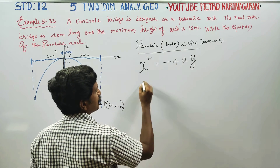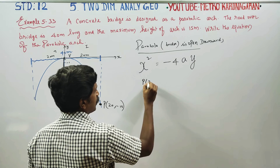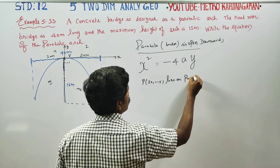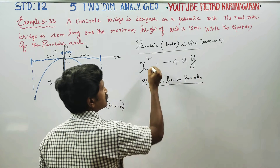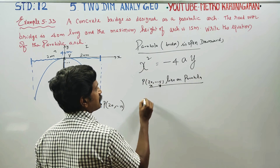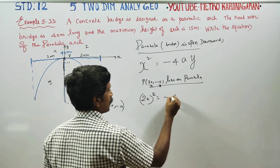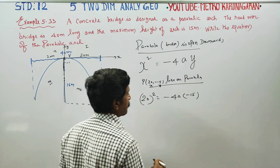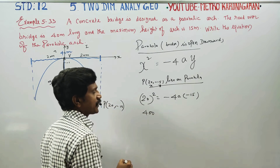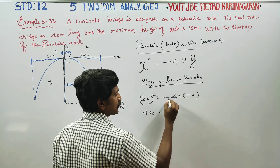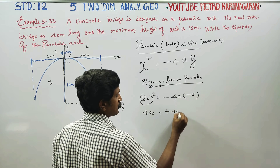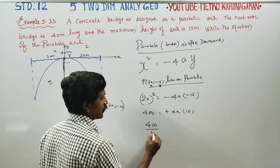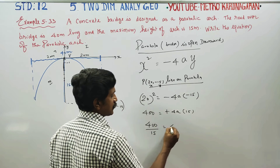Now, the point (20, -15) lies on the parabola. Substituting: x² = -4ay, so 20² = -4a(-15). That gives 400 = 4a × 15.